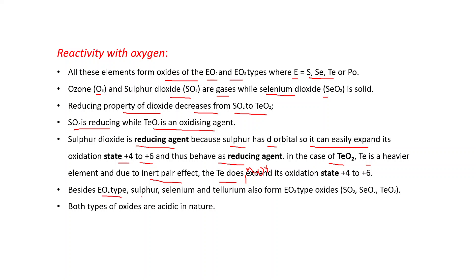Besides EO2 type, sulfur, selenium, and tellurium also form EO3 type oxides like SO3, SeO3, and TeO3. Both types of oxides are acidic in nature.